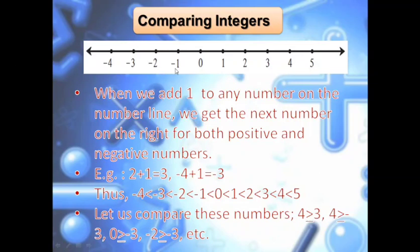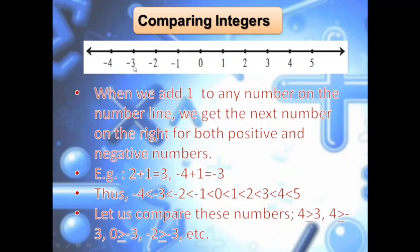Any number on the left hand side of the negative numbers — any number next to any negative number — is smaller than its previous number. Similarly, when I come to positive numbers, any number on the right hand side is the greater one. 2 is greater than 1, 3 is greater than 2, 4 is greater than 3. The smallest positive number here is 1, and the biggest negative number is minus 1. So: minus 4 is less than minus 3, minus 3 is less than minus 2, minus 2 is less than minus 1. The biggest number in this section of the number line is minus 1.